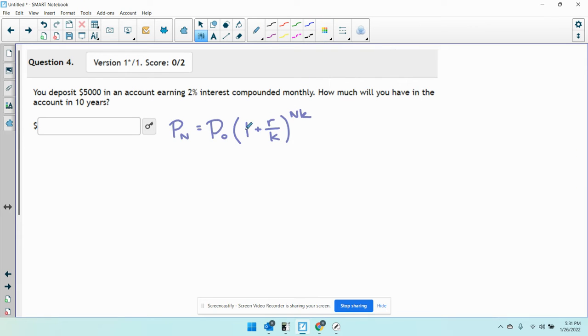So if I go through my problem, I can pull out everything I know. I deposit $5,000, that's my initial deposit, P sub 0. R is going to be 0.02, compounded monthly, K is going to be 12, and N is going to be 10. So just diving right in,